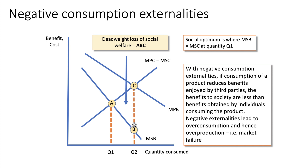From society's point of view, we prefer to be at point A, where social costs and social benefit meet — that's output Q1. Above Q1, the social cost lies above the social benefit, therefore there's a welfare loss. The deadweight loss of welfare is triangle A, B, C. And again, the bigger the externality, the greater is the potential welfare loss.